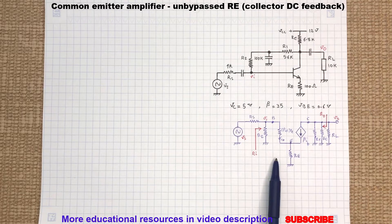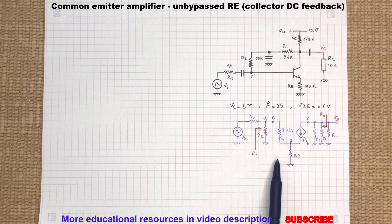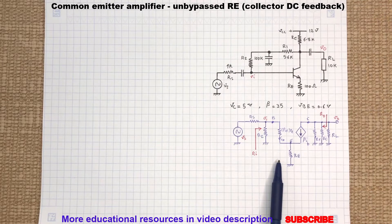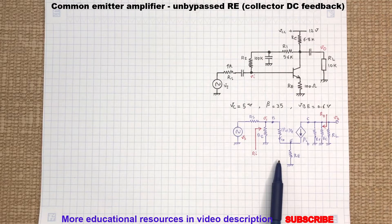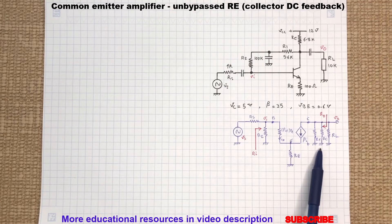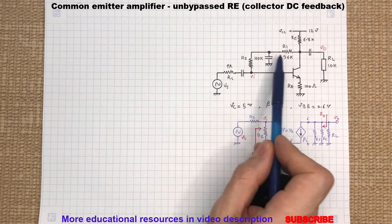As you can see from this AC model, when we perform a small signal analysis we assume all the DC supply sources are grounded and all the capacitors are shorted.